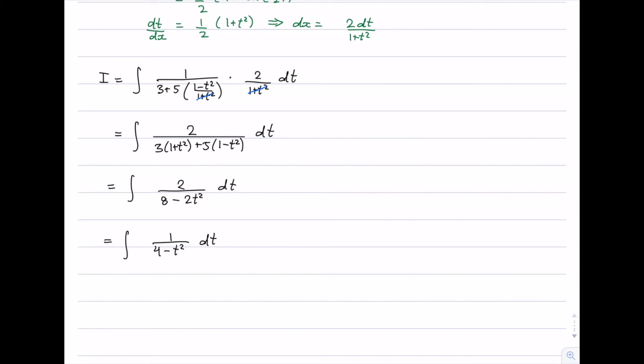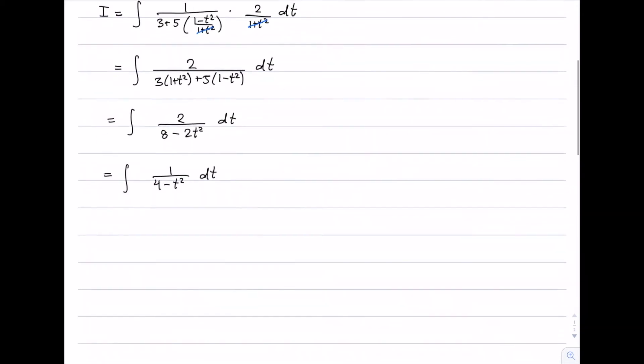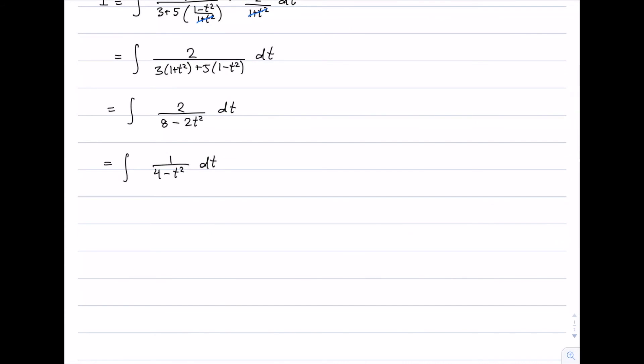And so now we get to a point where we'd have to use partial fractions. I'm not actually going to do the partial fraction decomposition in the video, but what we're going to end up with is a quarter over 2 minus t plus a quarter over 2 plus t dt. That's just by partial fraction decomposition.